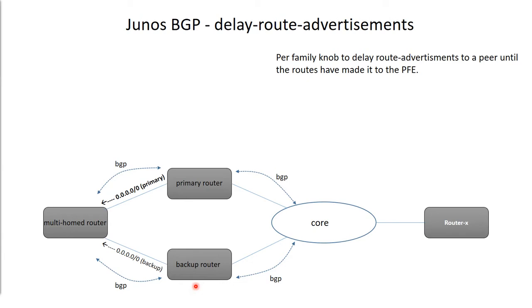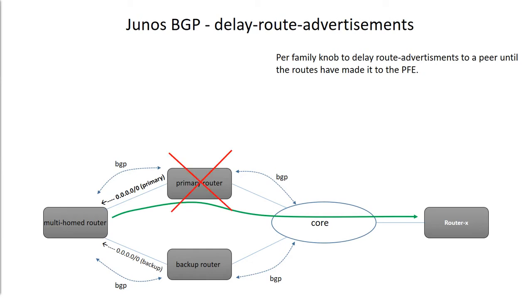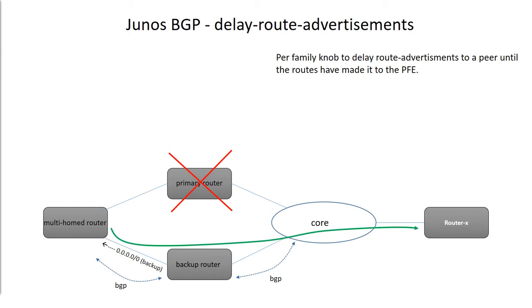These routers have many tables, many services, and a large number of routes. During normal operation, everything is working fine and traffic is following its primary route. But what happens when the primary router goes down?